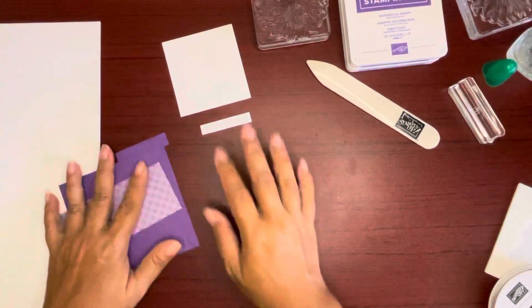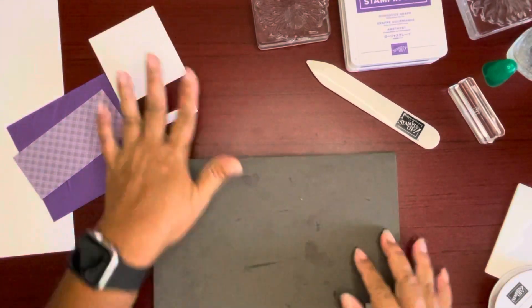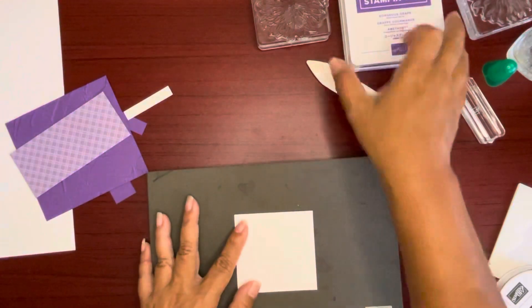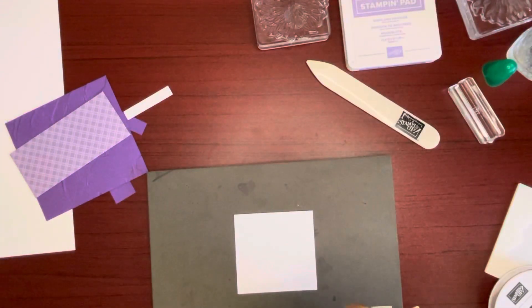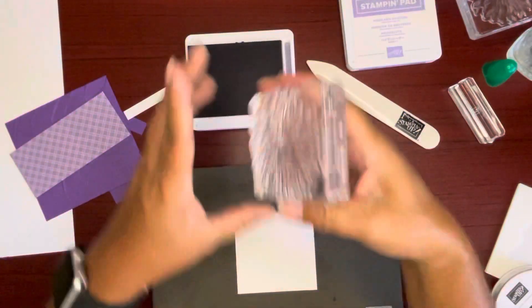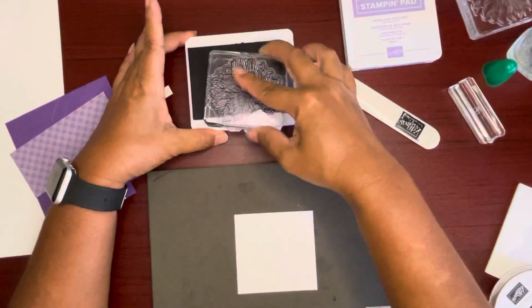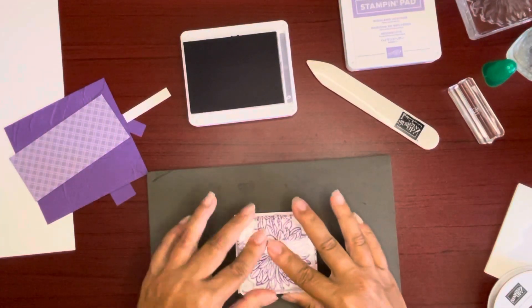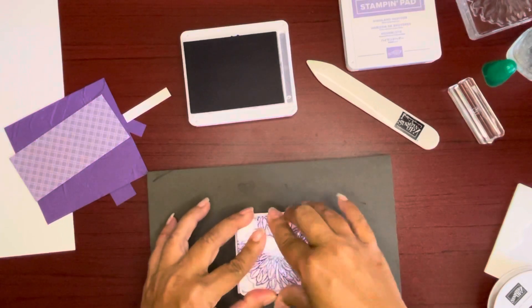But let's get to our stamping. I am going to bring in my Stampin' Cut Emboss Mat using this piece here. I'll do Gorgeous Grape first since it was on top. Inking up. Stamping in the center of the piece.